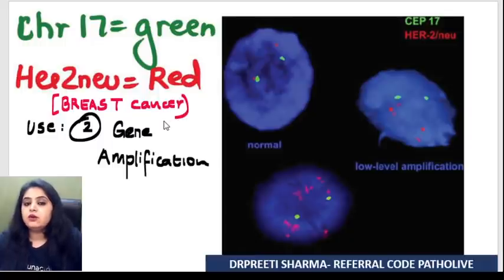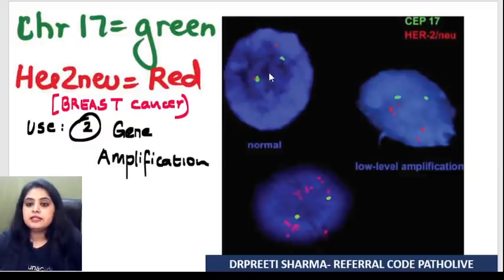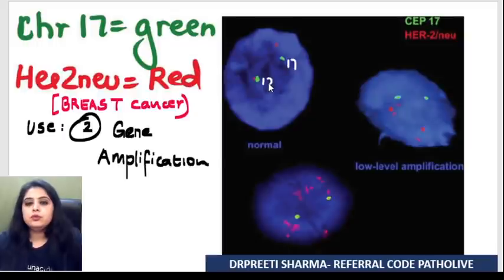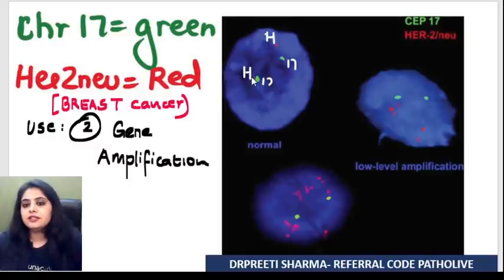HER2/neu gene is present on chromosome 17. So green color means chromosome 17 — two green signals mean the usual pair. If I have two chromosome 17s, how many HER2/neu genes should I see? Two — one per chromosome 17. That would be a normal cell.